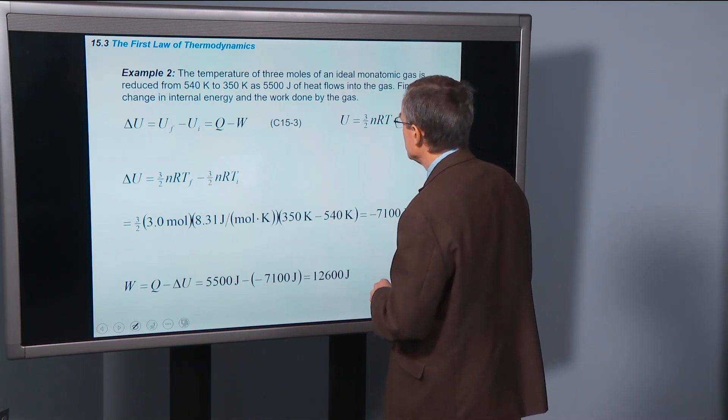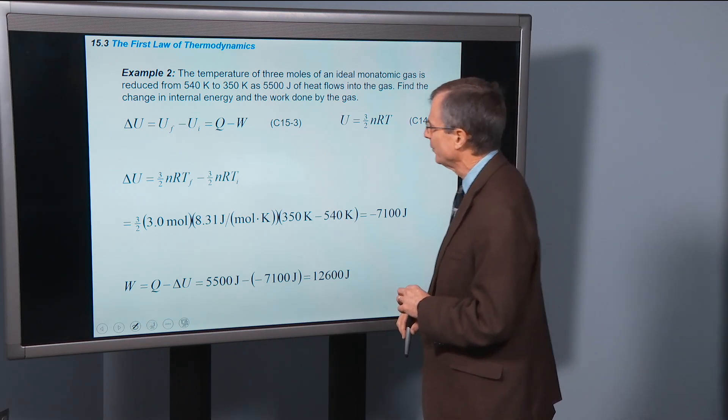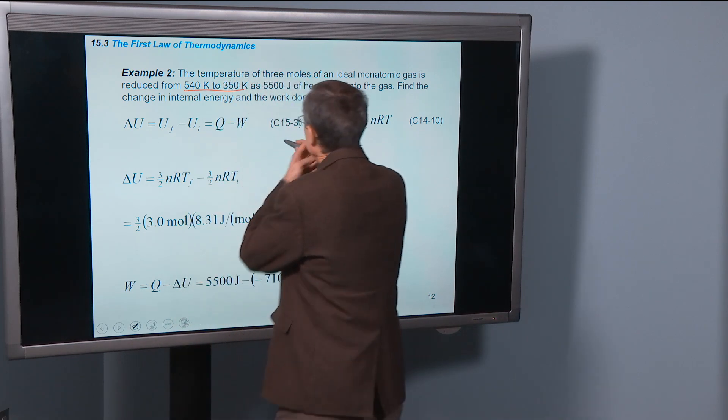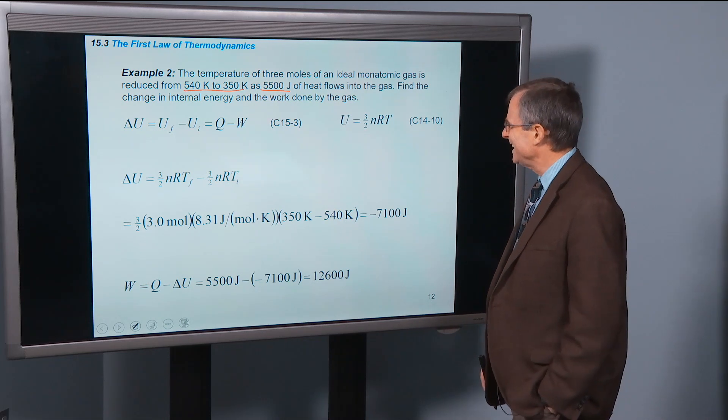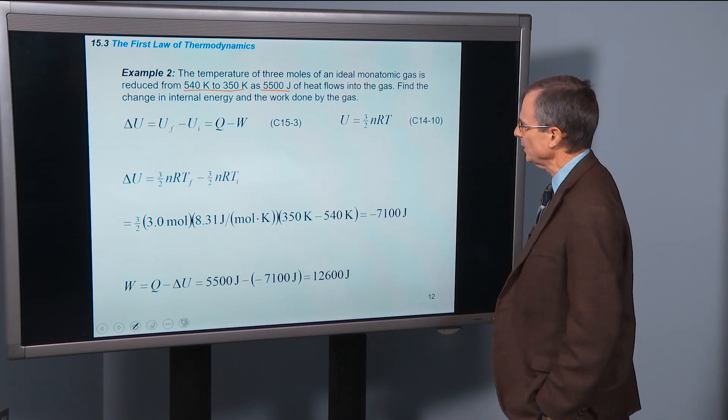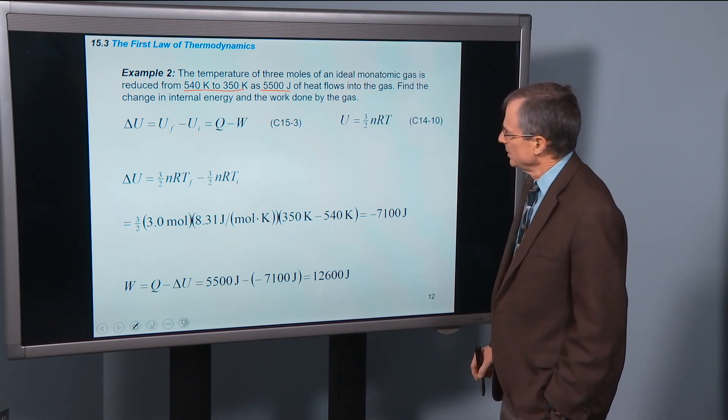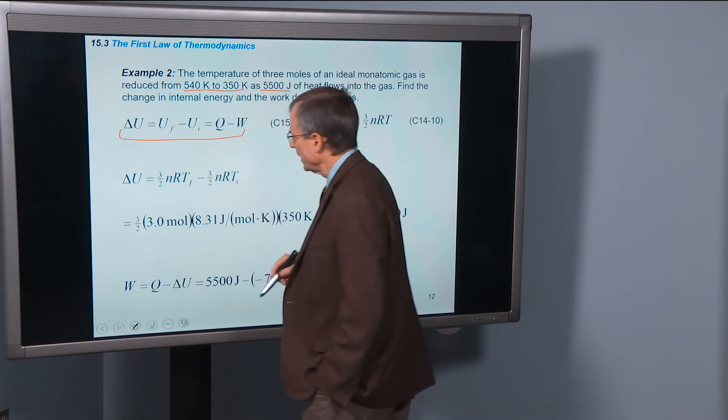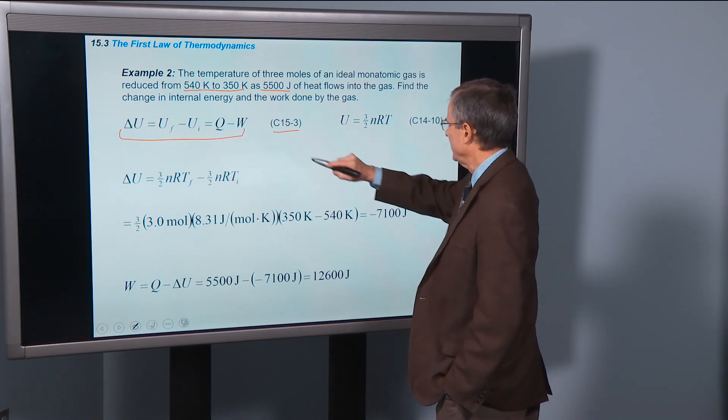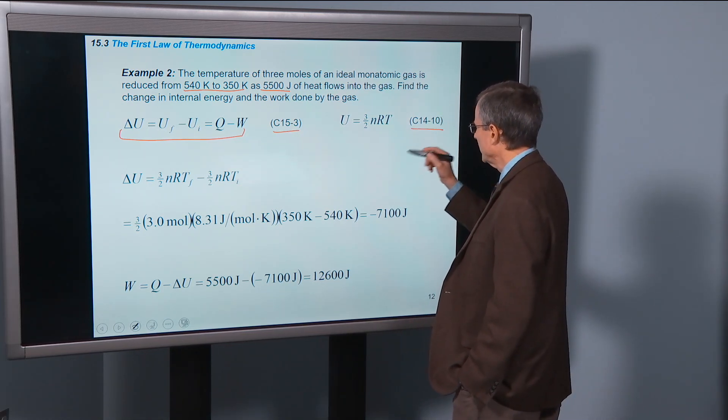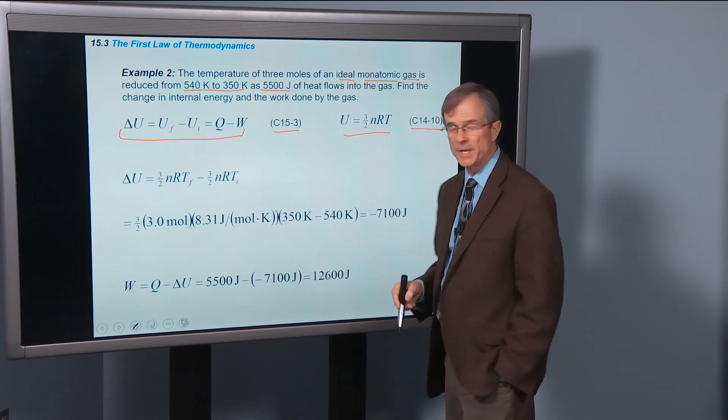Another example. The temperature of three moles of an ideal monatomic gas is reduced from 540K to 350K as 5500 joules of heat flows into the gas. Find the change in internal energy and the work done by the gas. We know delta U is Q minus W—that's the first law of thermodynamics. We know from concept 14-10 that the internal energy of an ideal monatomic gas is 3/2 nRT.